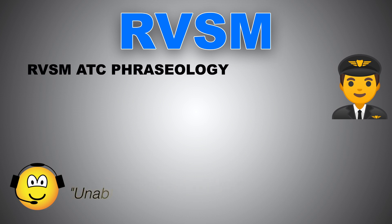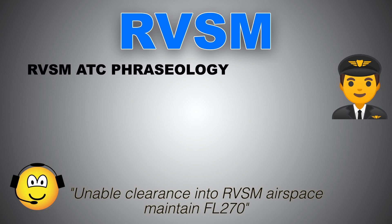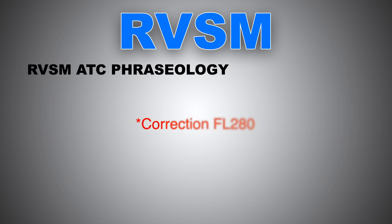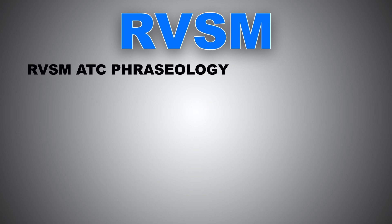When refusing clearance, ATC phraseology will be: 'Unable clearance into RVSM airspace, maintain flight level [X],' or instruct the aircraft to descend or climb accordingly. Since RVSM airspace extends from FL290 to FL410 inclusive, a non-RVSM-approved aircraft will be maintained at either FL270 or FL430. The reason it's not FL280 or FL420 is that a non-approved aircraft must maintain at least 2,000 feet of vertical separation — so if traffic is at FL410, 2,000 feet above gives FL430.